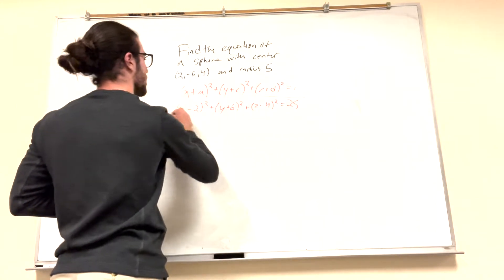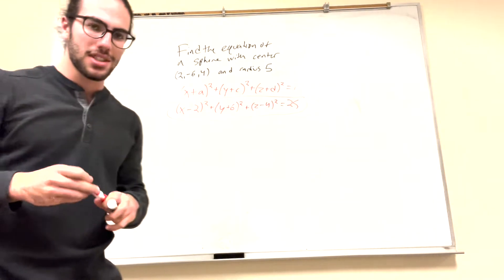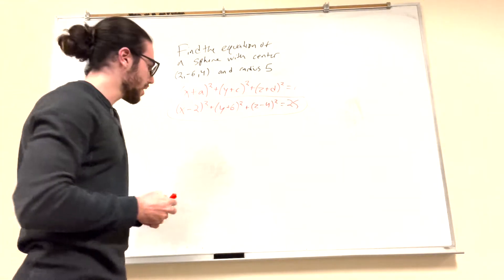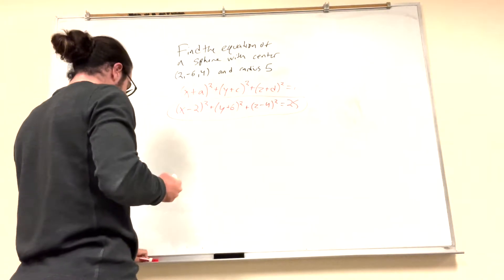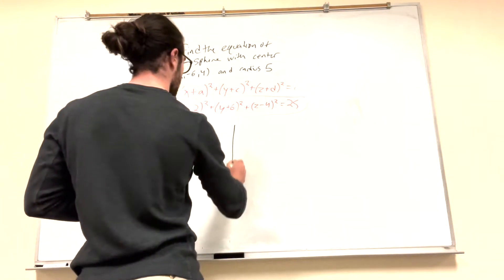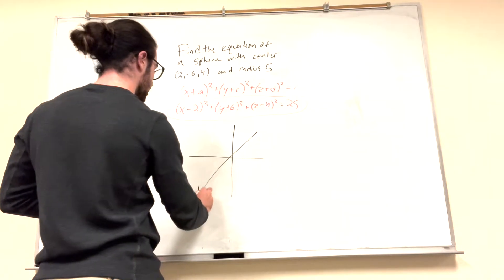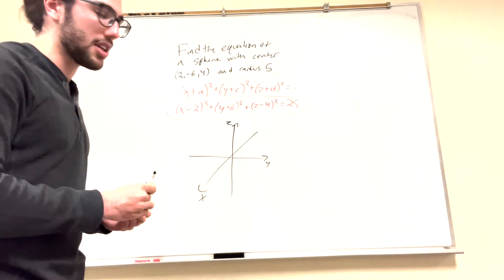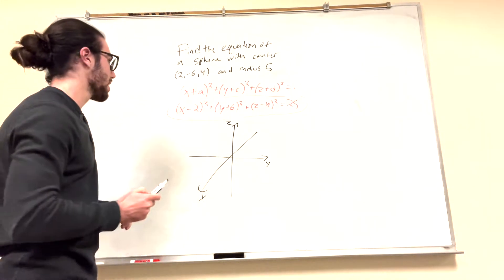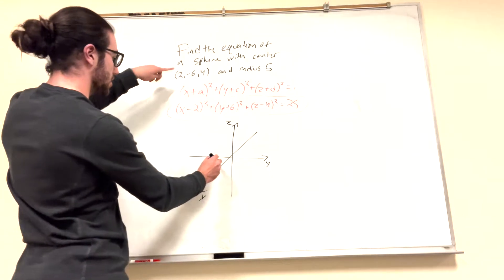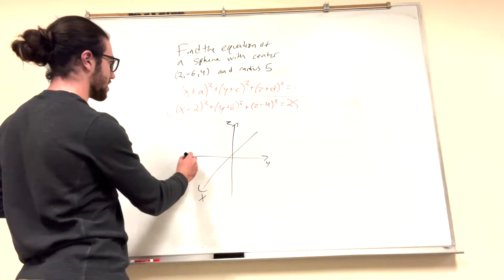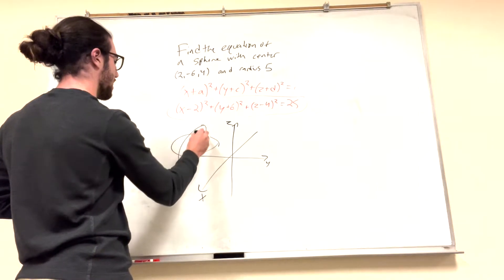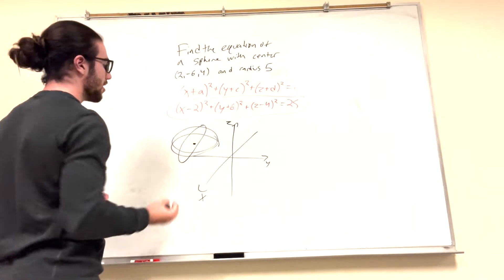So this is our equation. Now, the next part of this question wants us to describe its intercepts with the coordinate planes. Let's draw it out. This is x, this is y, this is z. The center is going to be at (2, -6, 4), and it has a radius of 5, so it's going to look something like this.